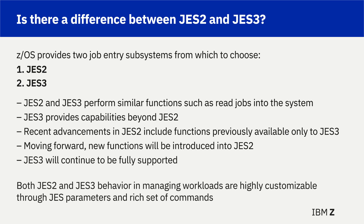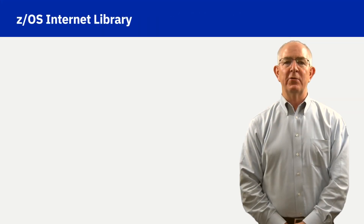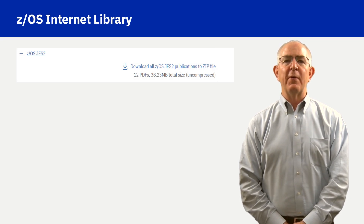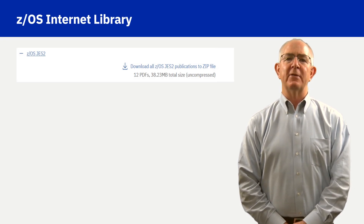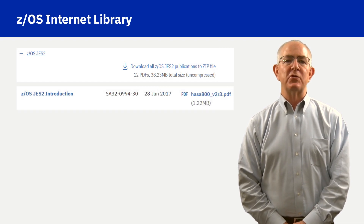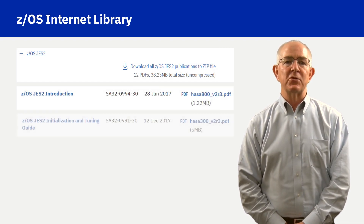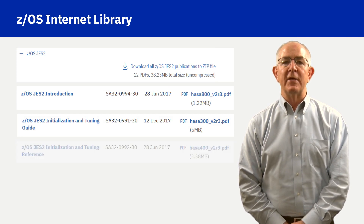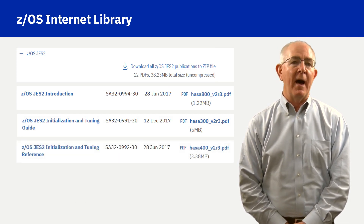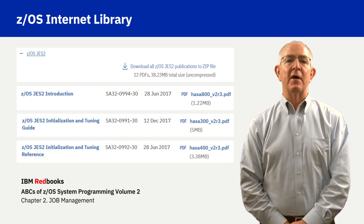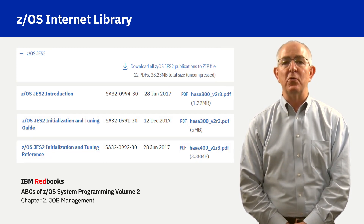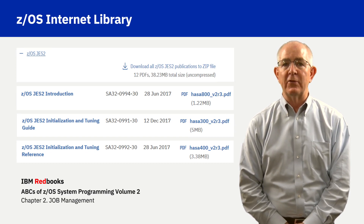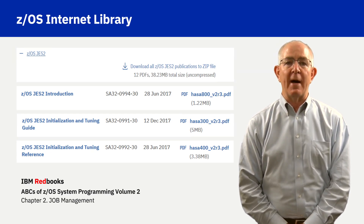Both JES2 and JES3 are highly customizable with commands to control the respective JES resources. The ZOS Internet Library includes a JES2 bookshelf. Three recommended books for those beginning the ZOS skills journey would be the JES2 Introduction, Initialization and Tuning Guide, and the Initialization and Tuning Reference. IBM Redbook ABCs of ZOS System Programming Volume 2, Chapter 2 is an excellent overview of JES job management.